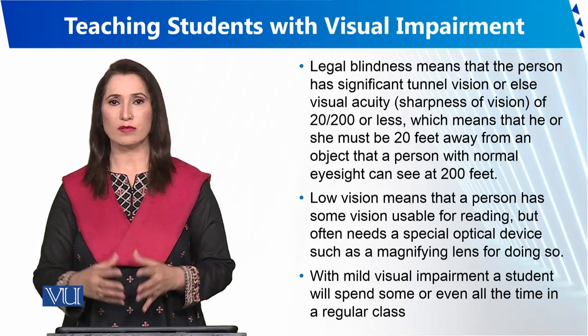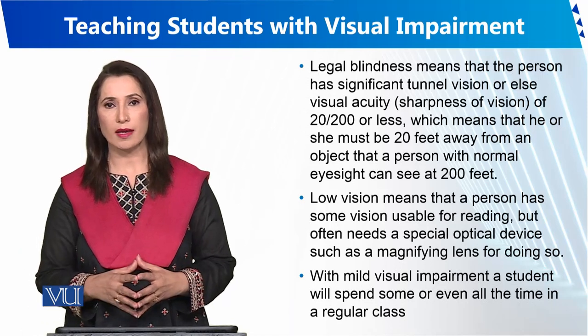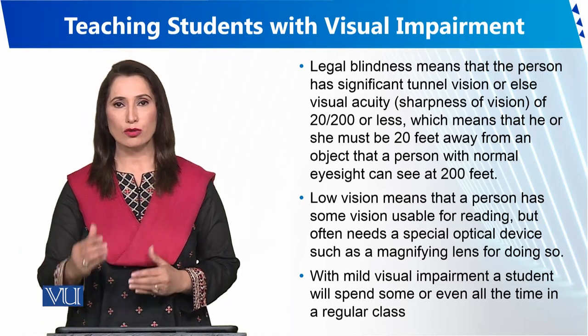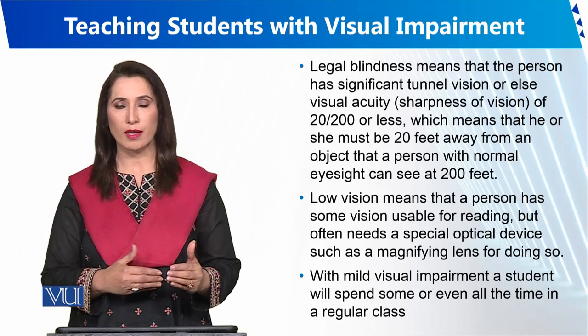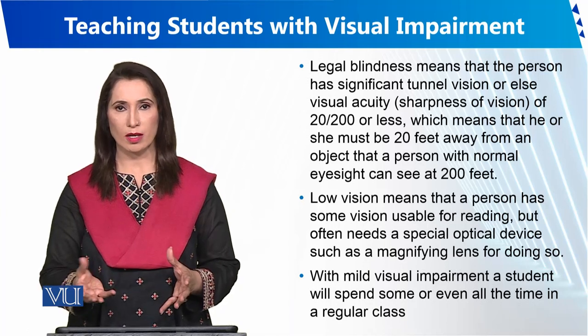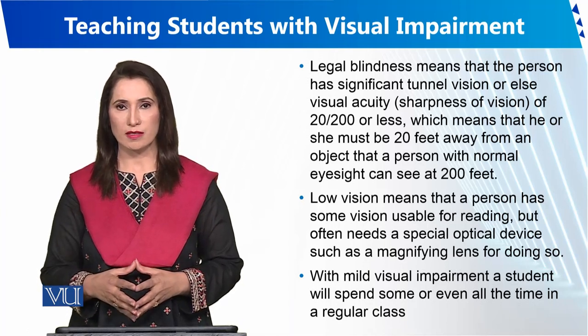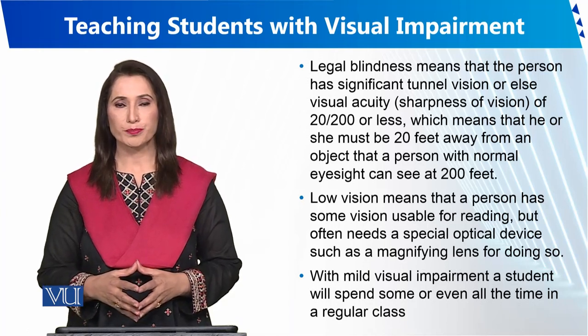Complete blindness can only be dealt with in special schools, while low and moderate visual impairments can be managed with glasses and lenses.